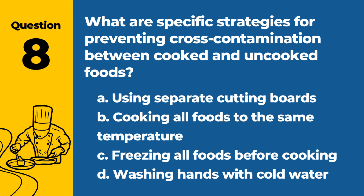Question 8. What are specific strategies for preventing cross-contamination between cooked and uncooked foods? a. Using separate cutting boards. b. Cooking all foods to the same temperature. c. Freezing all foods before cooking. d. Washing hands with cold water. Answer: a. Using separate cutting boards. Using separate cutting boards is a key strategy to prevent cross-contamination between cooked and uncooked foods.